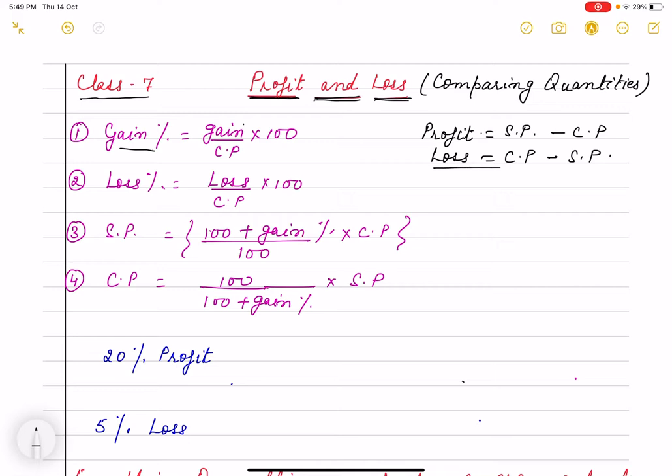This already you know that whenever we have a profit then selling price is more. So what is the profit percent or gain percent? That profit by CP into 100. Or what is loss percent? Loss by CP into 100.